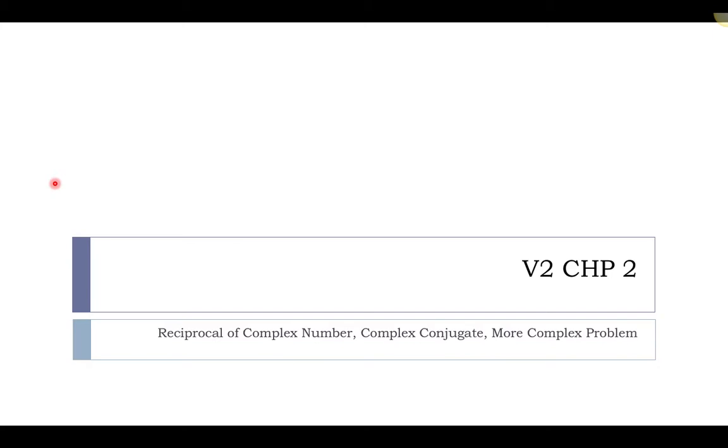In this presentation, we're going to talk a little bit more about complex numbers. We're going to talk about the reciprocal of a complex number, which is basically just 1 divided by a complex number. We're going to talk about what a complex conjugate is, and then we're going to look at a more complicated problem than what we've seen in past presentations.